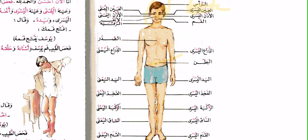So العين اليسرى is the left eye. الأذن اليسرى is the left ear. الفم is the mouth. الذراع اليسرى is the left arm — ذراع means arm. البطن is the belly. اليد اليسرى is the left hand — يد means hand. الفخذ اليسرى — الفخذ is the thigh.